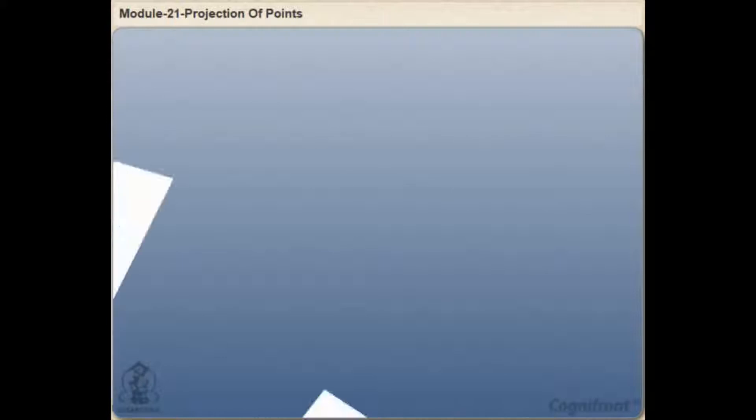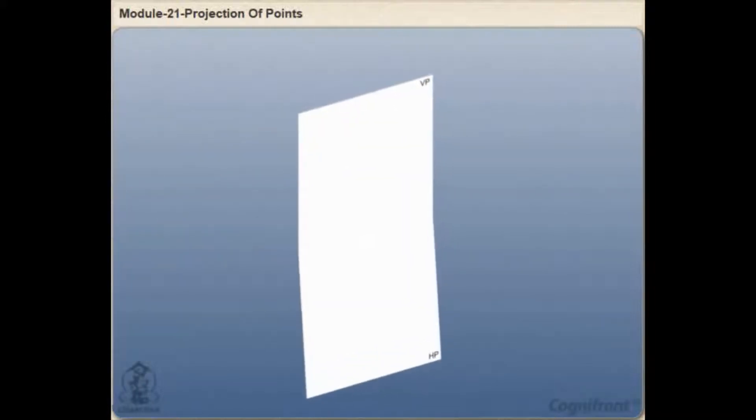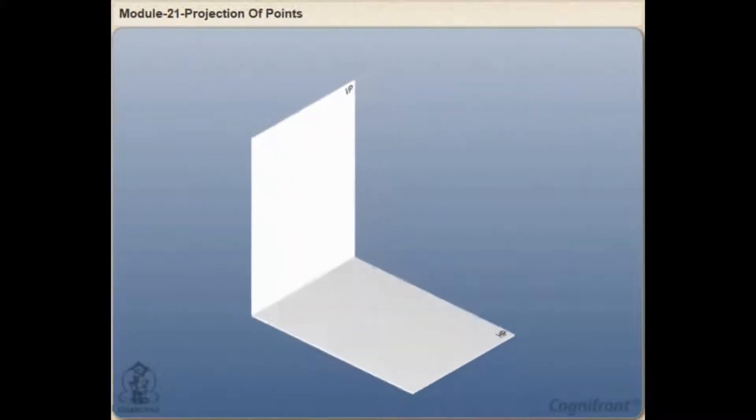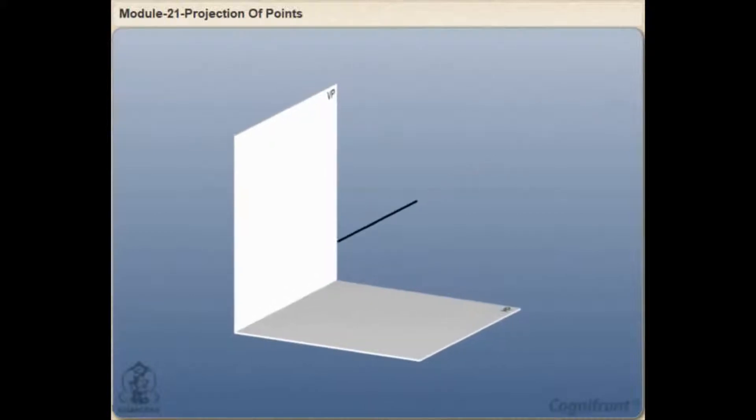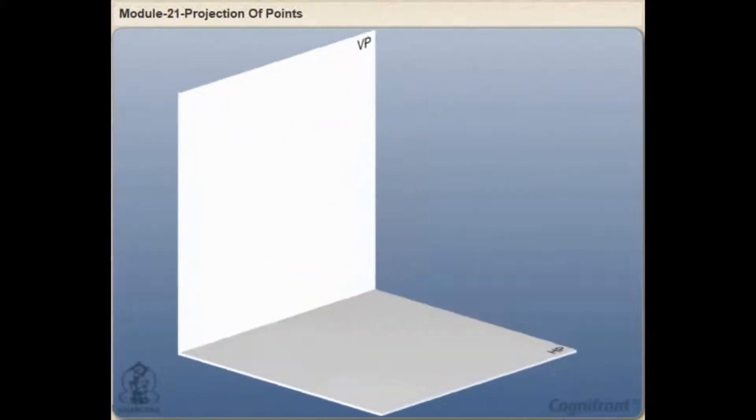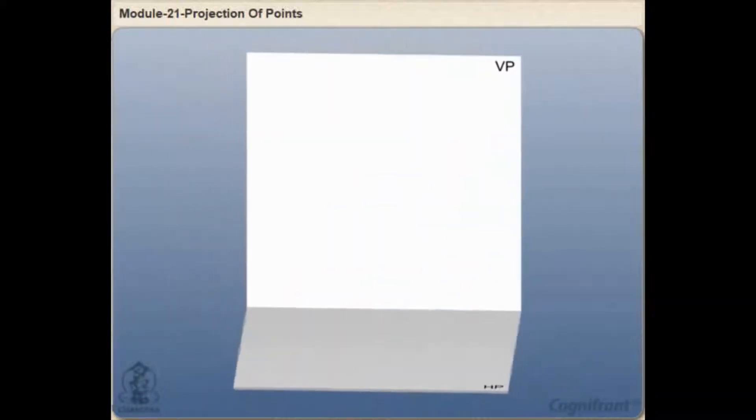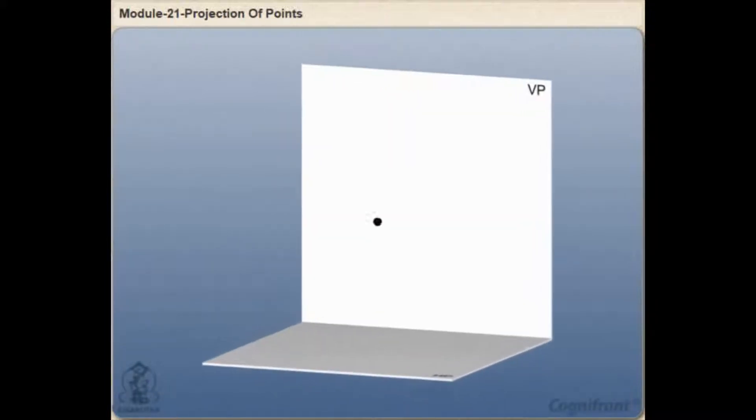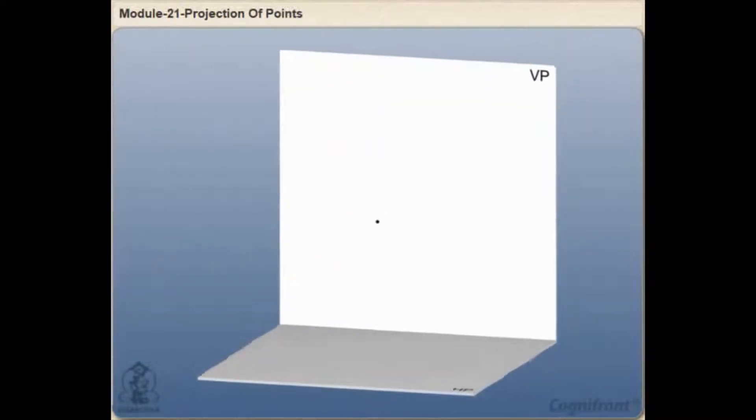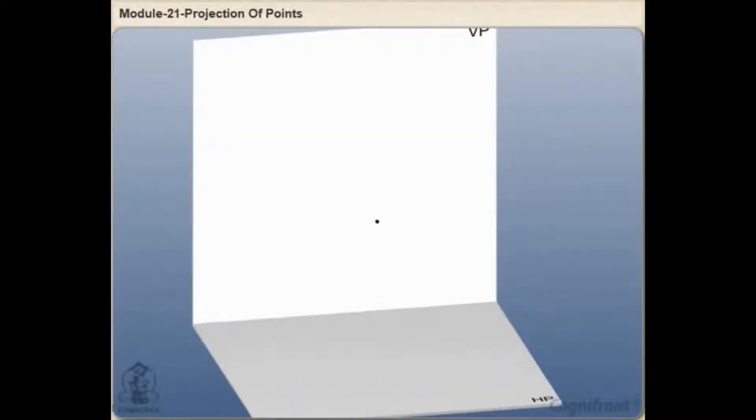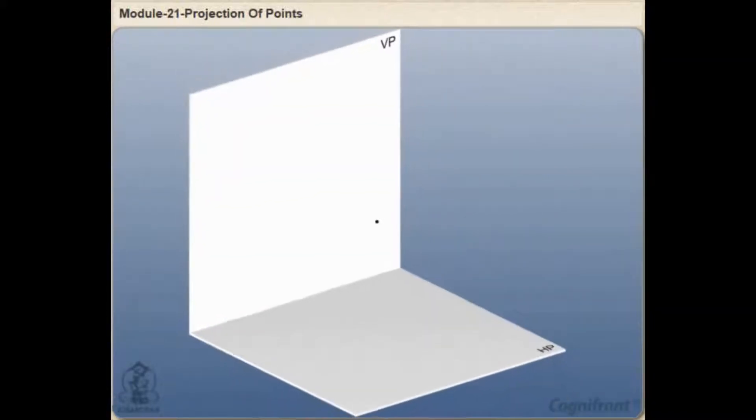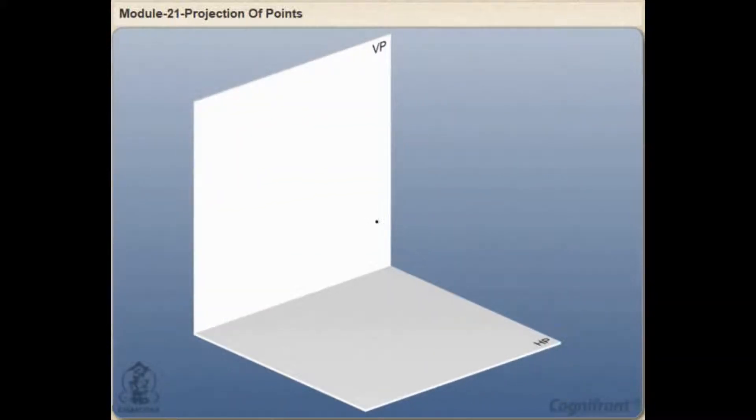Hi friends, let's start with actual construction of orthogonal projections of points, lines, and planes. First we'll study the projection of the simplest geometrical element as a point. So let's start with an example. Here a point object A is located in the first quadrant at a height of h units above HP and distance of d units in front of VP.